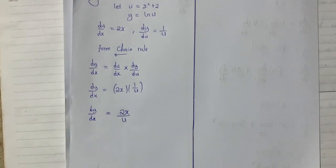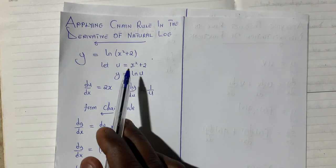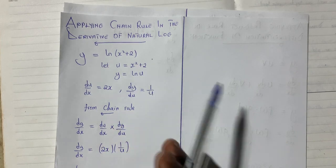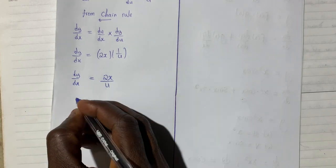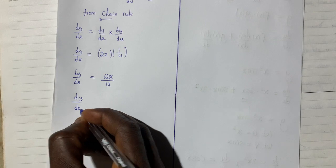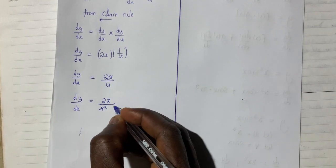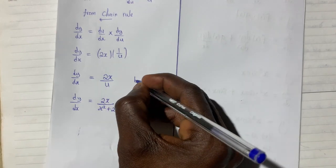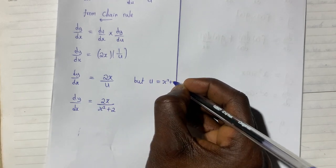But we shouldn't forget that in the beginning we said let u be equal to x squared plus 2. So we bring it back and substitute it into the final result giving us dy dx giving us 2x all over x squared plus 2.